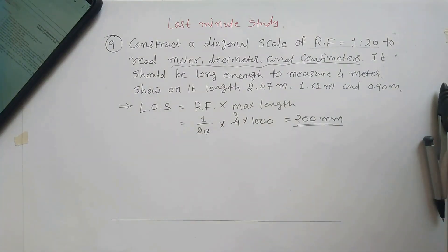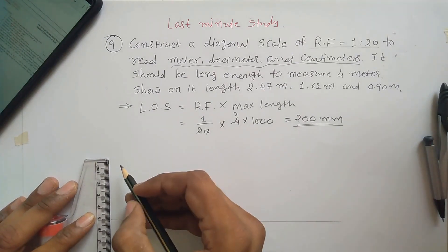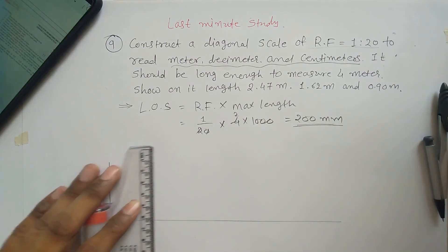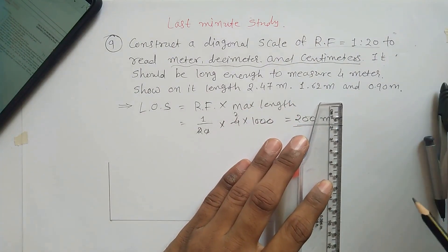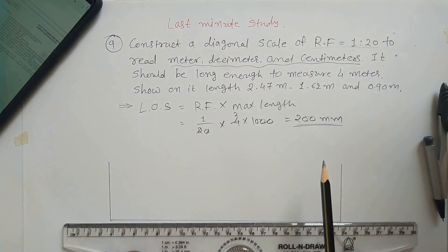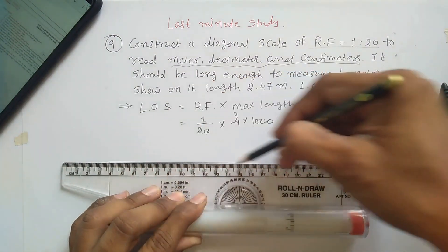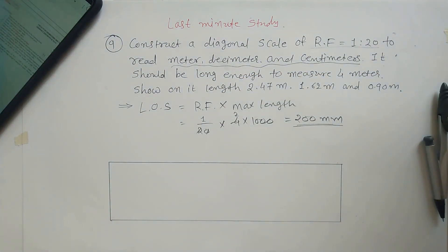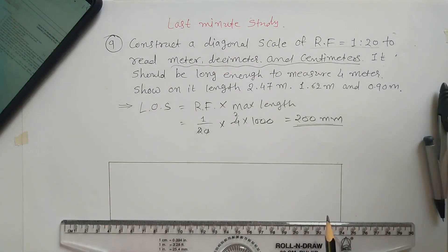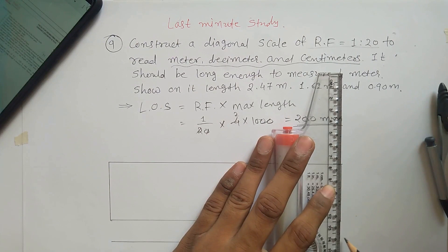This represents our scale. Now, as shown earlier, you have to construct a rectangle. In diagonal scale, you draw a line of five centimeters long and construct a rectangle with this as a reference, drawing a parallel line like this. You have to construct this rectangle for the diagonal scale and mention each and every data used to construct this scale.